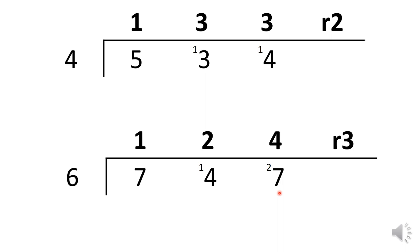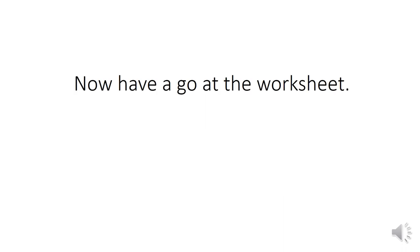How many groups of six can I make out of 27? I can make four complete groups, leaving me with three left over. I put that here — remainder three. So 747 divided by six is 124, remainder three. Now have a go at the worksheet for today. Bye.